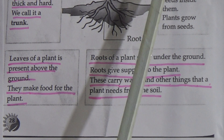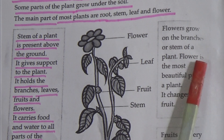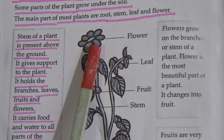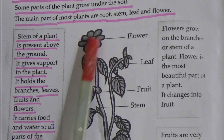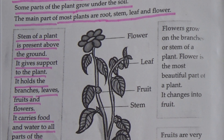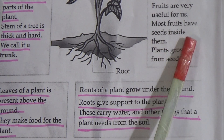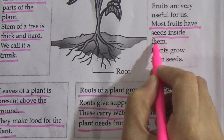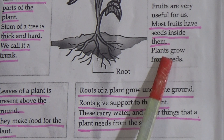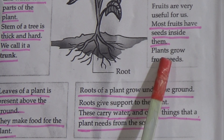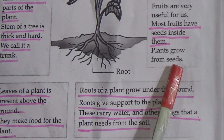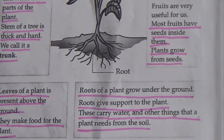Flowers grow on the branches or stem of a plant. Flower is the most beautiful part of a plant, and it changes into a fruit. Fruits are very useful for us. Most fruits have seeds inside them — for example, the mango has a seed inside. Plants grow from seeds.